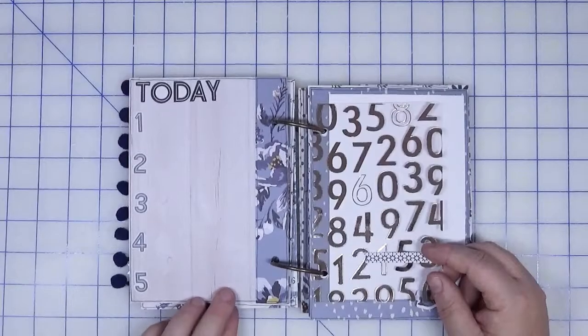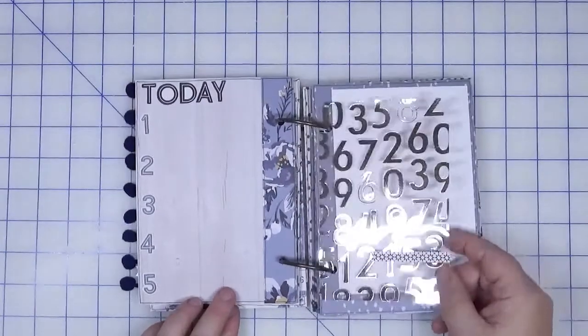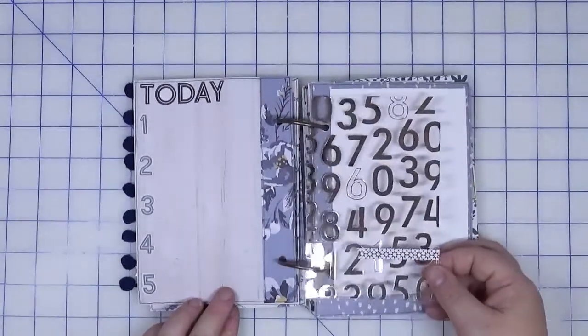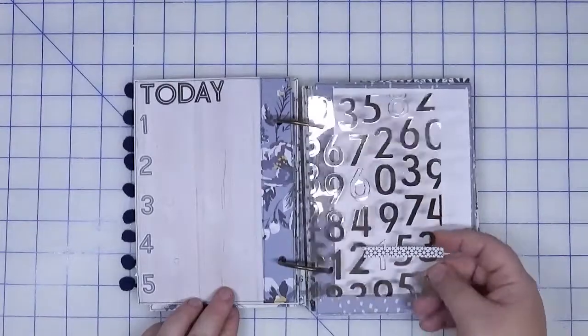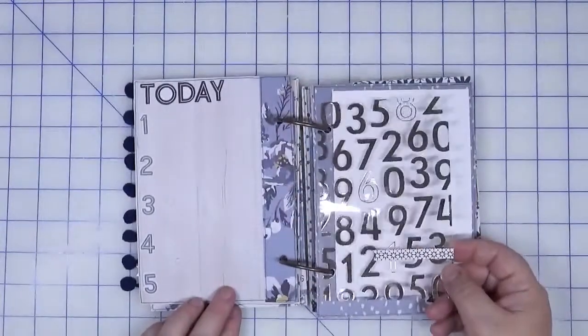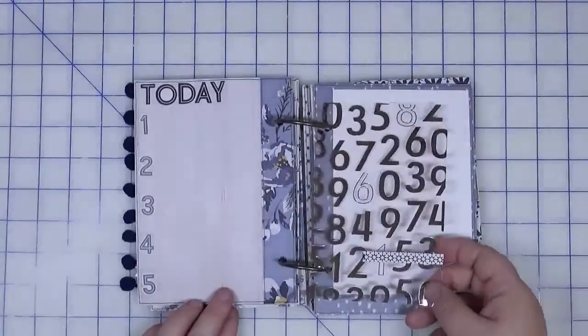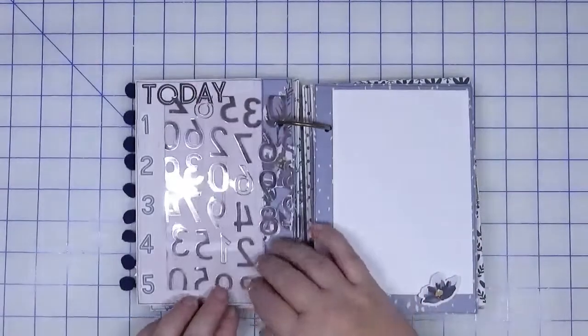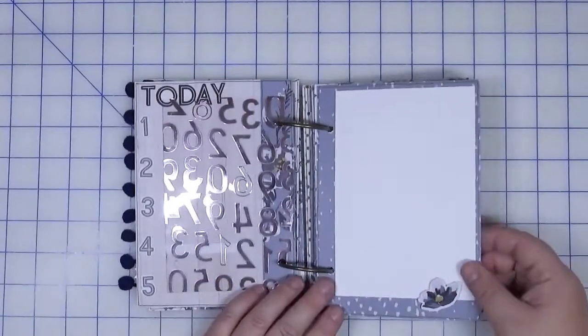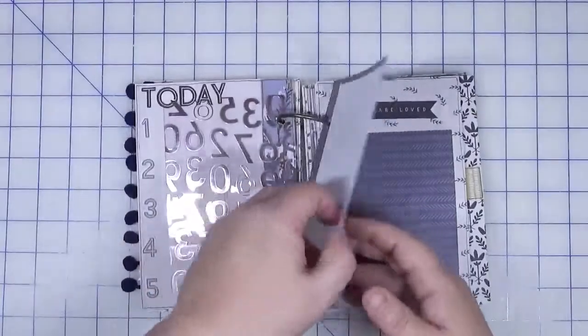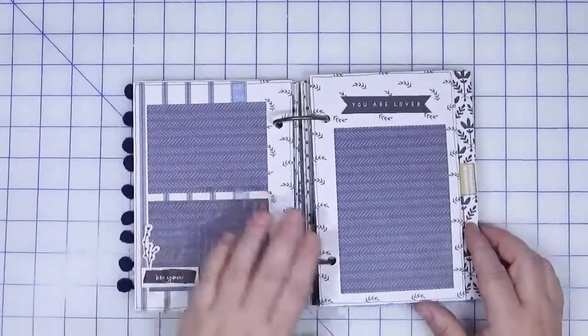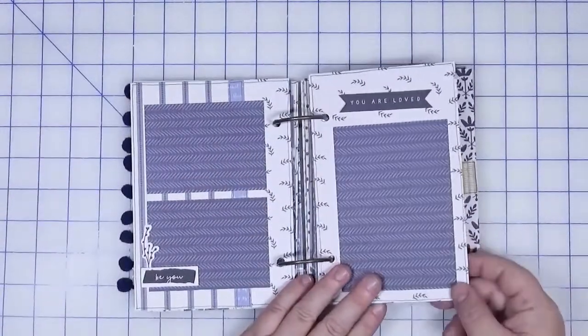There's a journaling prompt all ready to go. She gave us this numbered acetate sheet. How fun is that? Again, am I going to put anything in here? Probably not, but it sure is fun to have in the album. A big photo mat followed by a couple more photo mats.